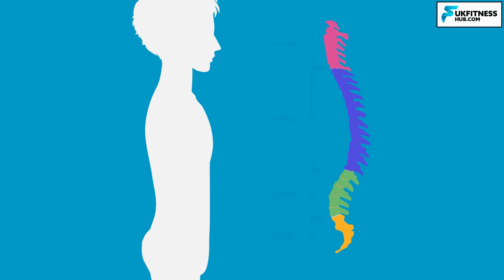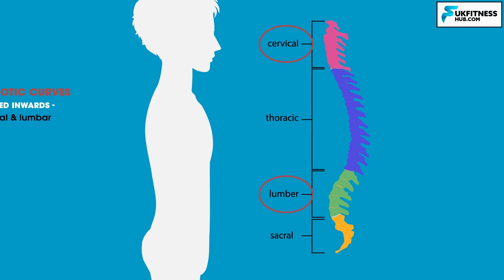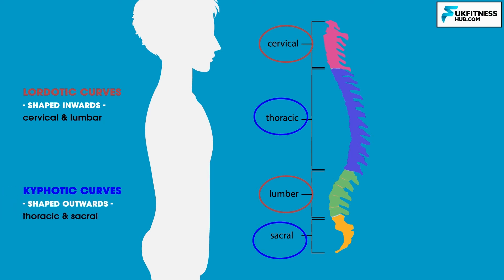The four curves of the spine are the lumbar curve, thoracic curve, cervical curve, and sacral curve. Both the cervical and lumbar curves are shaped inwards — known as lordotic curves — and the thoracic and sacral curves are shaped outwards — known as kyphotic curves. These four curves are split into two sections: primary and secondary. A primary curve is what you were born with and a secondary curve is what you've developed. The kyphotic thoracic and sacral curves are primary curves, whereas the lordotic cervical and lumbar curves are your secondary curves.